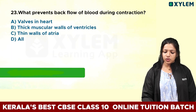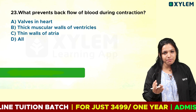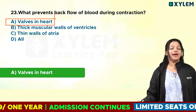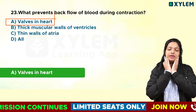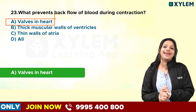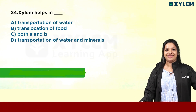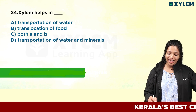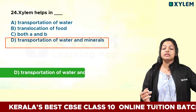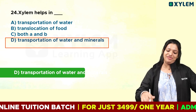What prevents backflow of blood during contraction? When the heart contracts, we have backflow prevention — that is why we have valves in the heart. We call them tricuspid valve, bicuspid valve, aortic valve, and pulmonary valve. These valves prevent backflow. Next question: xylem helps in — xylem function is very important.